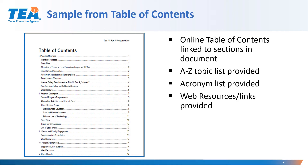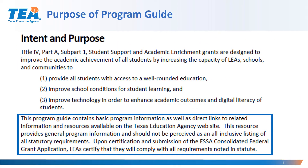You may see a snapshot of the Table of Contents of the Program Guide 2.0. It provides an online Table of Contents that's linked to sections in the document. An A through Z topic list is provided. An acronym list and web resources are provided within the Program Guide. This Program Guide contains basic program information, as well as direct links to related information and resources available on the Texas Education Agency website. This resource provides general information and should not be perceived as an all-inclusive listing of all statutory requirements.